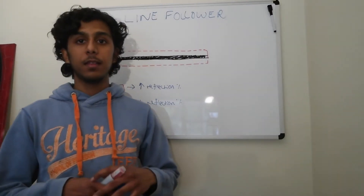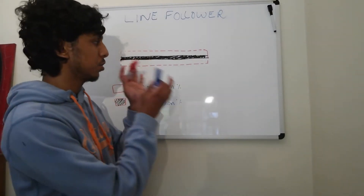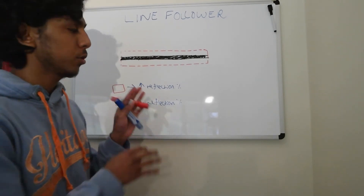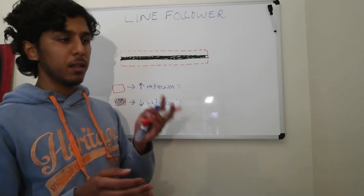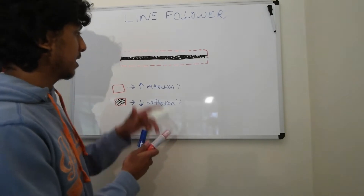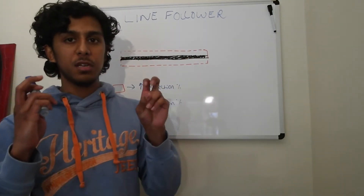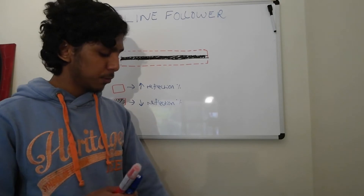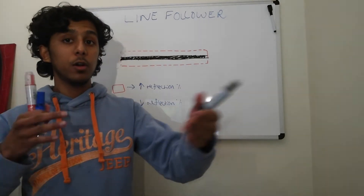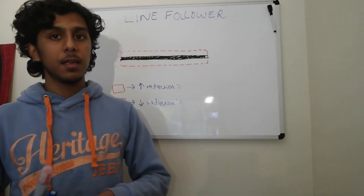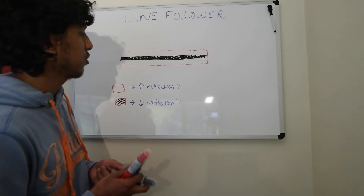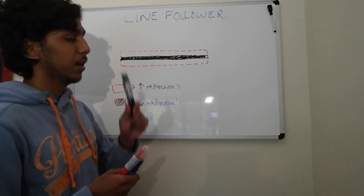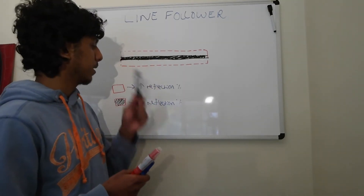So now I'm going to explain the pseudocode of the line follower. I've drawn a schematic or diagram of our line. Essentially this red boundary is just an imaginary boundary to represent that on our FLL maps we have a line. This line is essentially a white line followed by a black line followed by another white line.